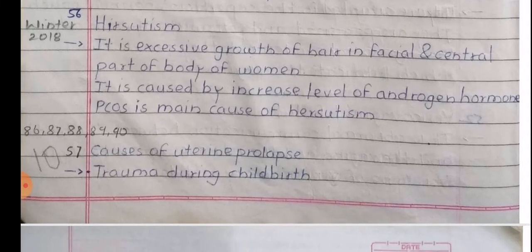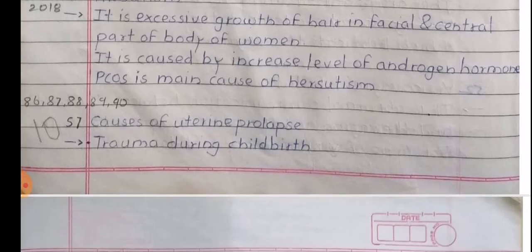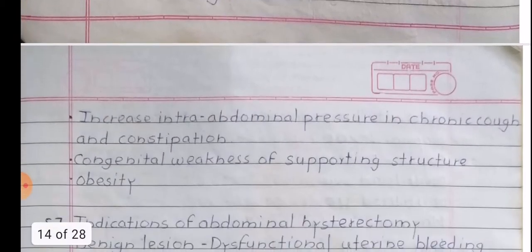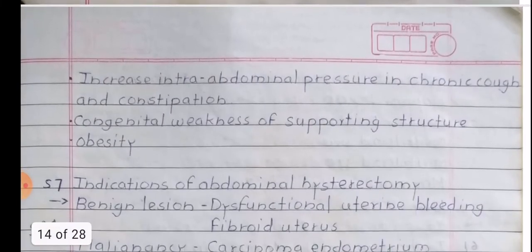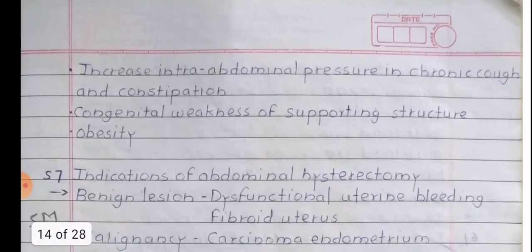Causes of uterine prolapse: trauma during childbirth, increased intra-abdominal pressure from chronic cough and constipation, congenital weakness of supporting structures, and obesity.